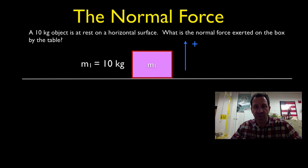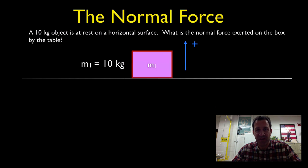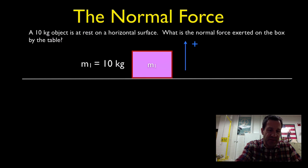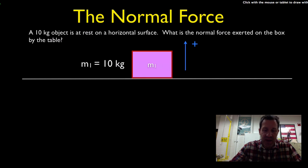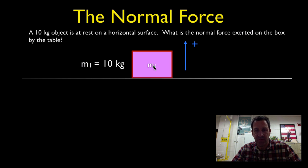We're going to go through four different examples, starting with the relatively easy and straightforward and getting a little more complex, to explore how the normal force works and how it might change in certain cases. In this first case, we have an object that's at rest on a horizontal surface, and we want to know what is the normal force exerted on the box from the table. The mass of the object is 10 kilograms.